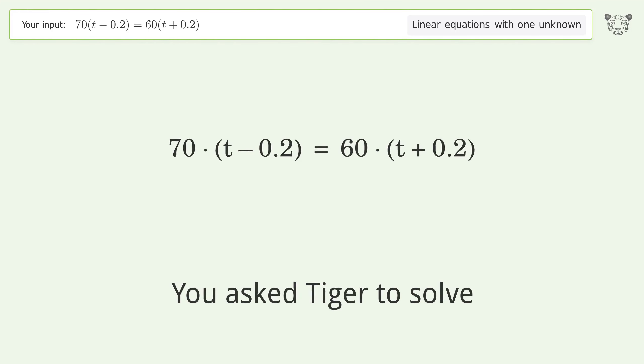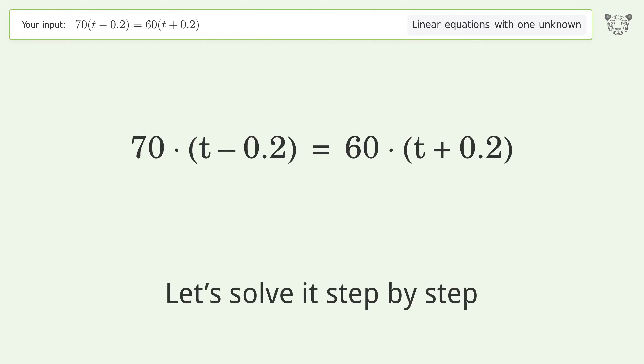You asked Tiger to solve this. It deals with linear equations with one unknown. The final result is t equals 13 over 5. Let's solve it step by step.